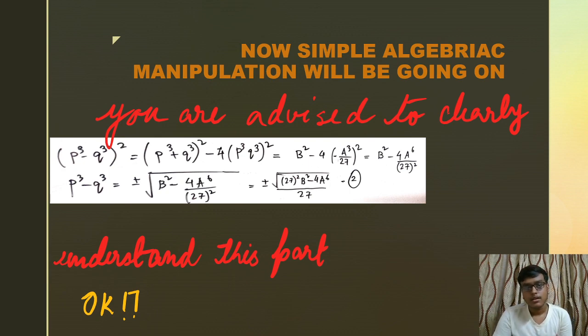p³ - q³ = ±√(b²/4 - a⁶/27). You can do it on your own, that's really the best method. Do it on your own. If you stumble anywhere, come back to this equation and see it again.